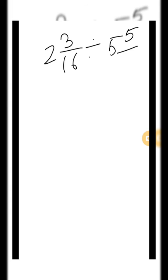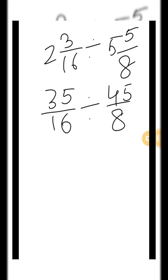See, one more question. 2 3/16 divided by 5 5/8. In this question, both fractions are mixed fractions. So first of all, we will convert mixed fractions into improper fractions. We will convert each fraction, we will convert two fractions into improper fractions. 16 times 2 is 32, 32 plus 3 is 35/16, divided by 5 times 8 is 40, 40 plus 5 is 45/8.